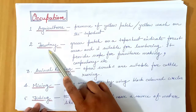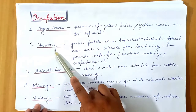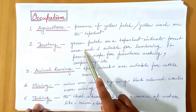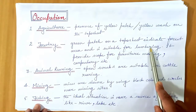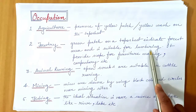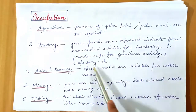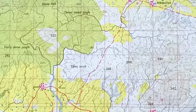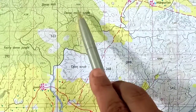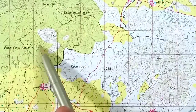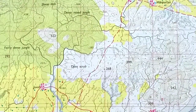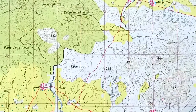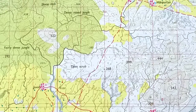If we have to know whether the people are involved in forestry, then we need to look for a green patch on the topo sheet. That indicates forest area and is suitable for lumbering — that is extracting wood from the trees — and it provides scope for furniture making, carpentry, etc. In a topographical map, the green area may be mentioned as dense mixed jungle or fairly dense jungle. The green region indicates the forest area, and the large number of trees provide scope for forestry and related activities.